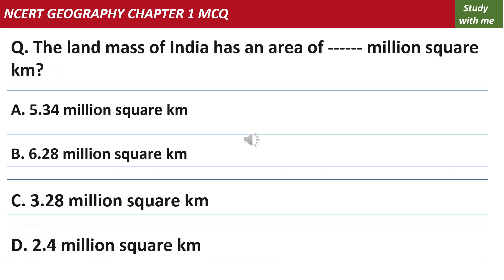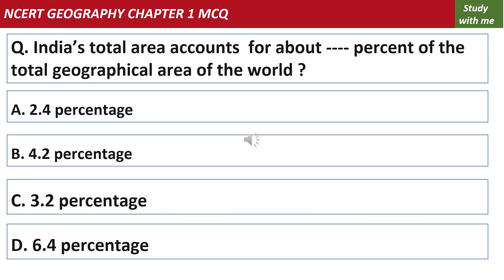The landmass of India has an area of how many million square kilometers? The landmass of India has an area of 3.28 million square kilometers. India's total area accounts for about what percentage of the total geographical area of the world? India's total area accounts for about 2.4% of the total geographical area of the world.